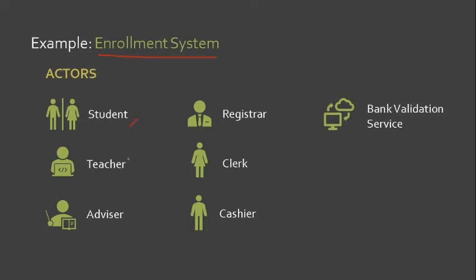The seven actors listed are: the student, the teacher, the advisor, the registrar, the clerk, the cashier, and the bank validation service. An actor is not a specific person, but rather a role that a person or a device plays within a specific context. An actor calls on the system to deliver one of its services — it does not necessarily have to be a person; it could be a service or a functionality of your system.